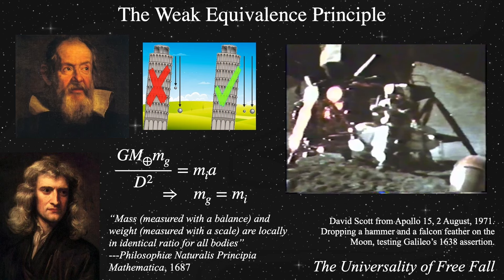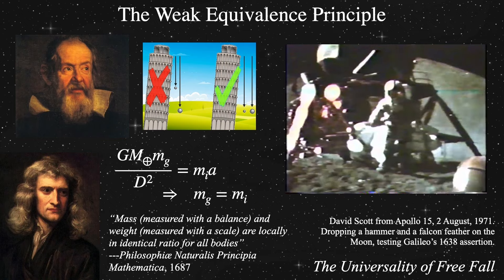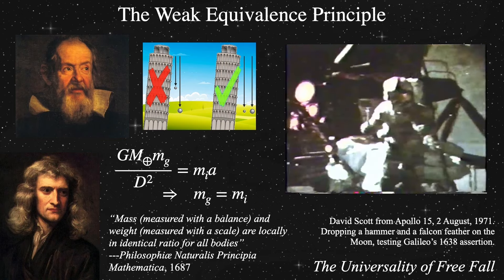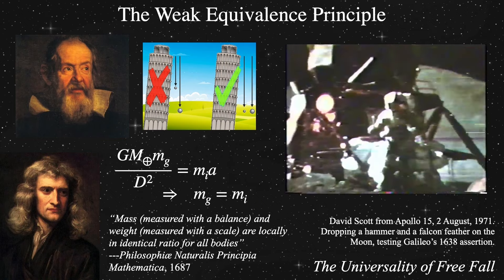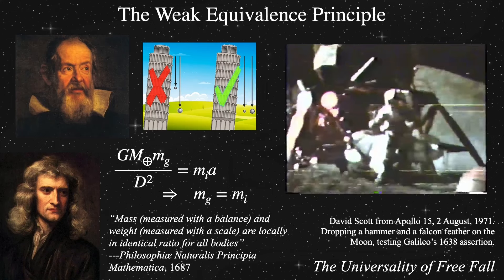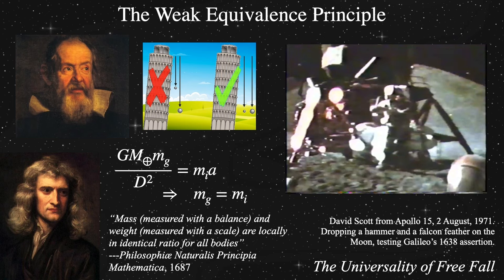We'll now take a refresher on what's called the weak equivalence principle. Let's reach back to when Galileo compared different materials experimentally. He determined that the acceleration due to gravitation is independent of the amount of mass being accelerated. To be fair, he didn't call it gravity — he made observations about falling and rolling objects.